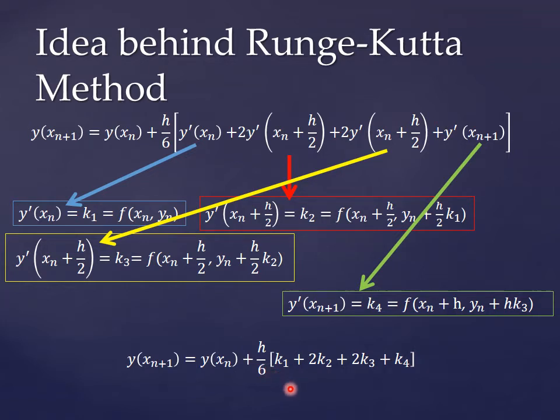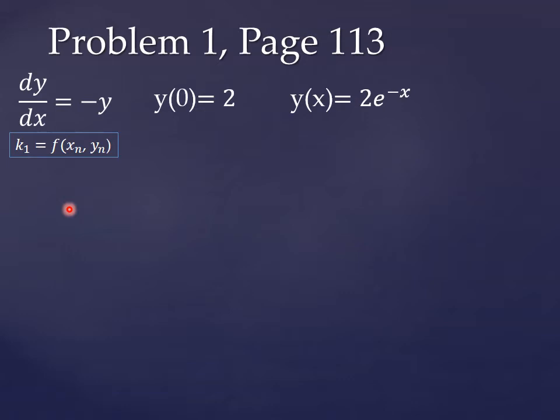So it's a little more complicated. You have four more function calls than we had before, but we get answers back for accuracy. So let's look at our problem one on page 113 here. And we've got our derivative of y with respect to x is equal to minus y, and our initial condition at x equals zero, y has to equal two. And we have an exact solution for this one in this case. So let's implement the Runge-Kutta method.